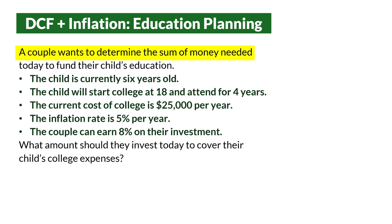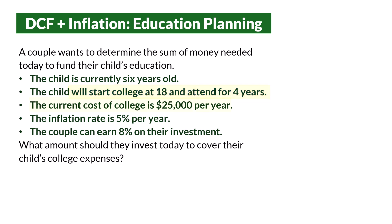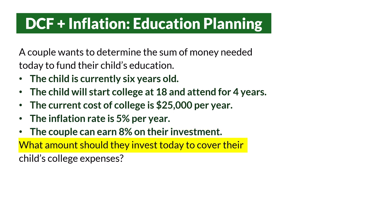In this video, I'll be calculating the lump sum amount a couple needs today to fund their child's education. The child is currently 6 years old, will start college at 18, and will attend for 4 years. The cost of college today is $25,000 per year. The inflation rate is 5% per year, and the couple can earn 8% on their investment. How much should they invest today to cover their child's college expenses?